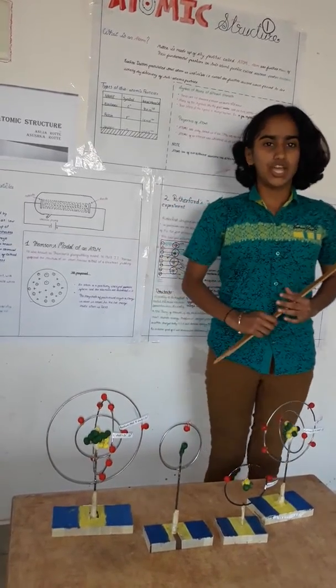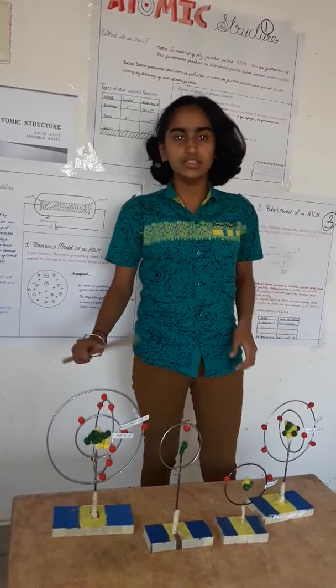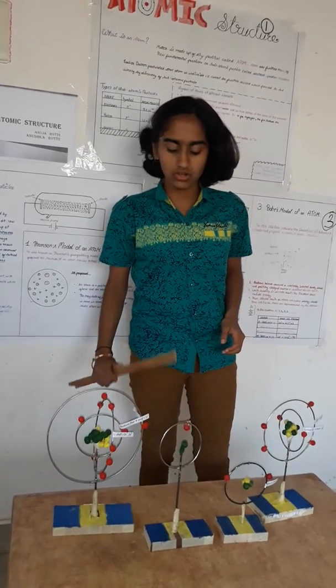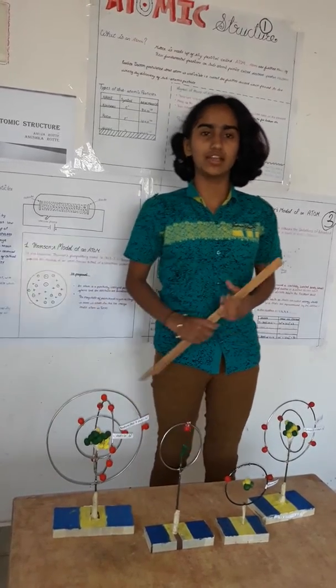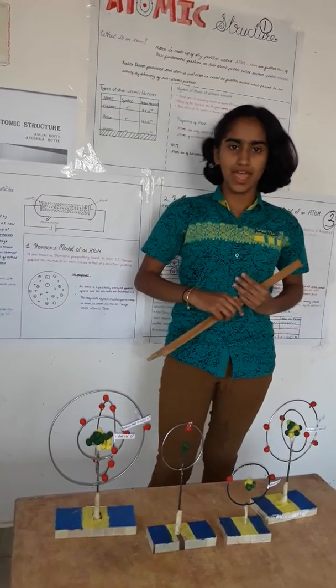Now about shells, subshells and orbitals. Shells are the paths where electrons revolve around nucleus. Shells are K, L, M, N.